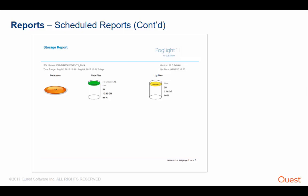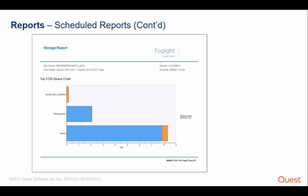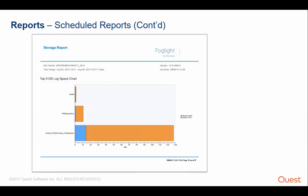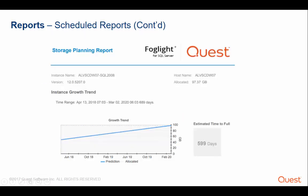Let's review some of the reports. Here we can see the top five database space chart, as well as top five database log space charts. If you're looking to do storage capacity planning, you can leverage the storage planning report with Foglight for SQL Server. This report shows the current allocated size of all the data files in the selected instance, as well as a prediction line — basically how much time it will take until the used size reaches the allocated size. In this case, Foglight estimated it will take 599 days until the storage will be completely full for the given selected instance.